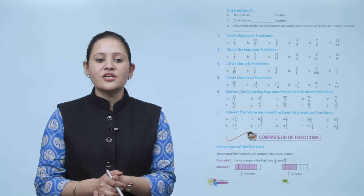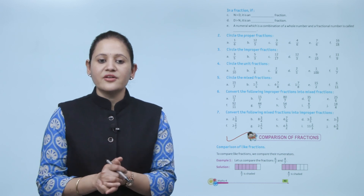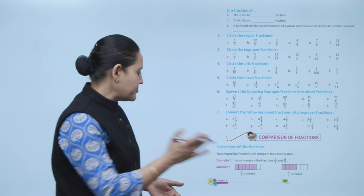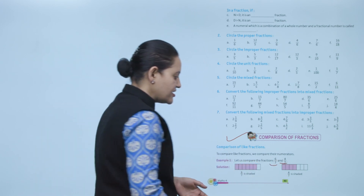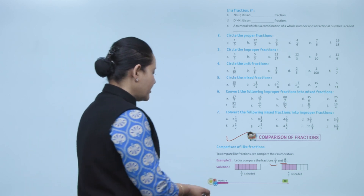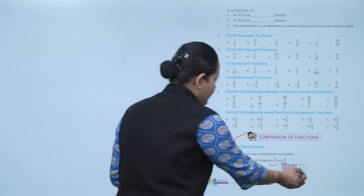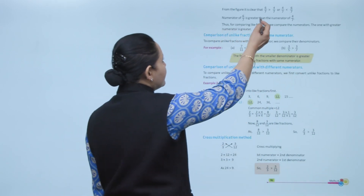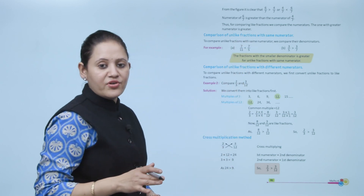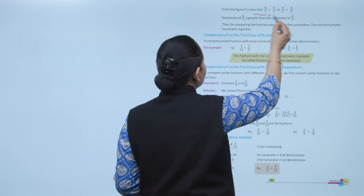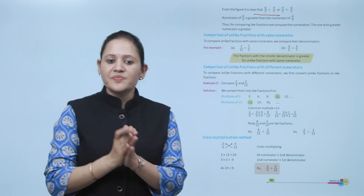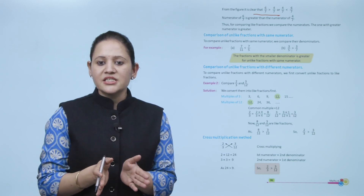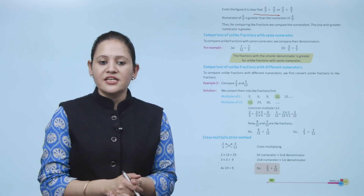First is comparison of like fractions. To compare like fractions, we compare their numerators. For example: compare 6 by 7 and 4 by 7 — both have the same denominator 7, so they are like fractions. Comparing numerators: since 6 is greater than 4, therefore 6 by 7 is greater than 4 by 7. For comparing like fractions, the one with the greater numerator is greater.